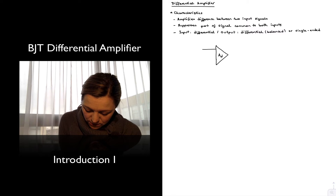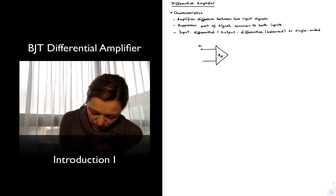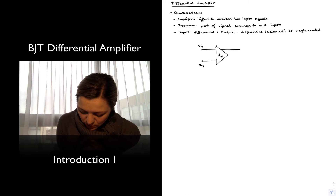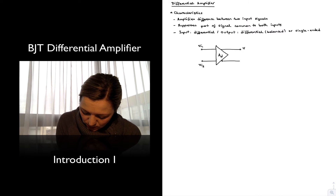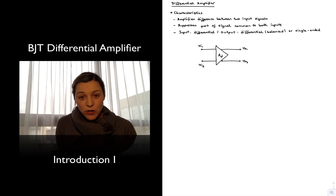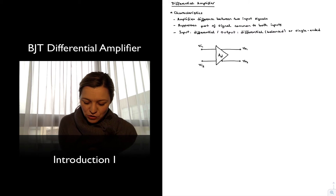We will have two input terminals. We can refer to the input signals as VIN1 and VIN2. And then we can typically have two output terminals. One of the output terminals is going to be equal to the gain times the differential input, and the other is going to be the complement of that — negative the gain times the differential input.